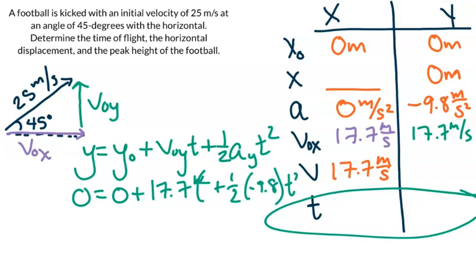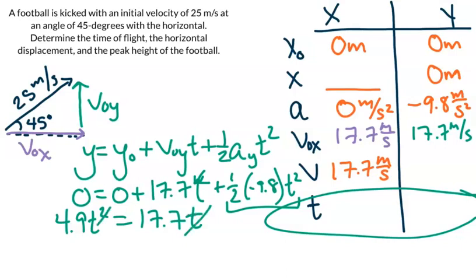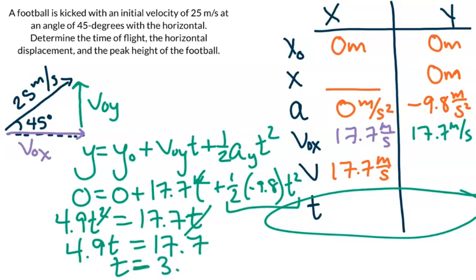We can simplify that. Moving this term to the other side, we'll have 4.9t squared on the left and 17.7t on the right. We have a t on both sides, so we're going to go ahead and cancel it out. Now we're left with 4.9t equals 17.7. Dividing by 4.9 on both sides, we end up with a time of 3.61 seconds in the air. And that's how we can go through and solve for the time of flight, or hang time, of the football.